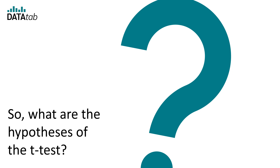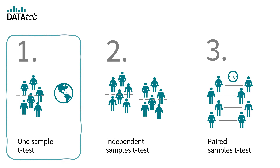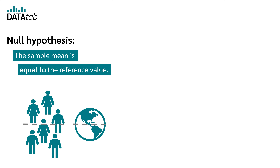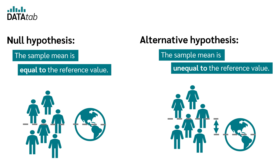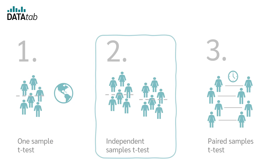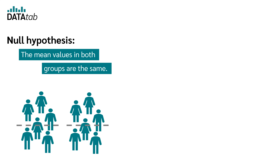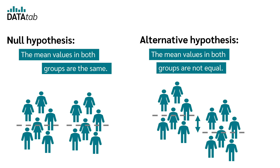What are the hypotheses of the t-test? For the one-sample t-test, the null hypothesis is that the sample mean is equal to the given reference value — so there is no difference — and the alternative hypothesis is that the sample mean is not equal to the reference value. For the independent samples t-test, the null hypothesis is that the mean values in both groups are the same, and the alternative hypothesis is that the mean values in both groups are not equal, so there is a difference between the two groups.